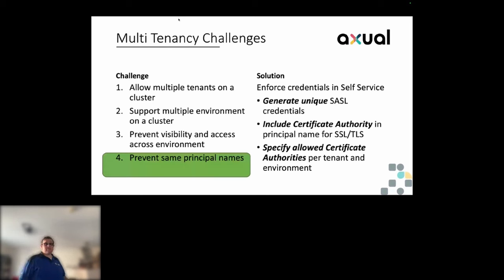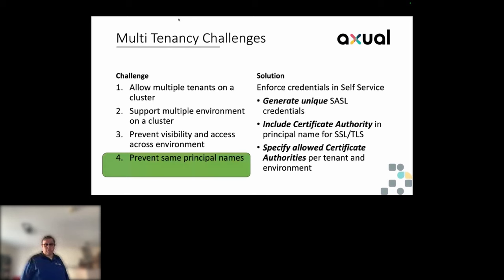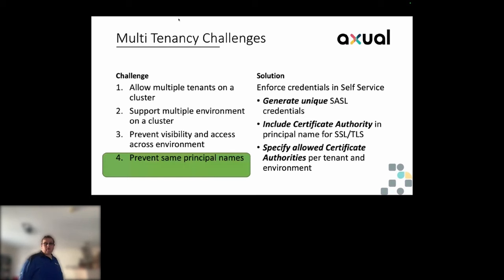The architecture looks like this: you have deployments — red, yellow, and green — representing different tenants with multiple environments. Sometimes they have the same name, like 'prod'. We collect them inside what we call an instance, which is a group of environments deployed on one or more clusters. We deploy them with pattern names, ACLs, and enable replication between clusters for those topics.